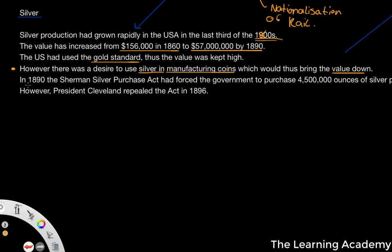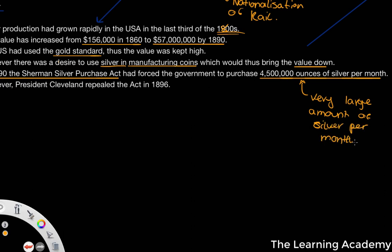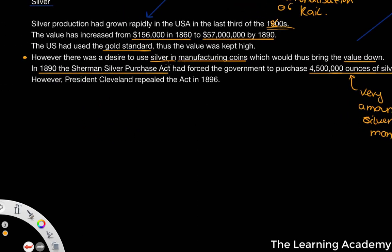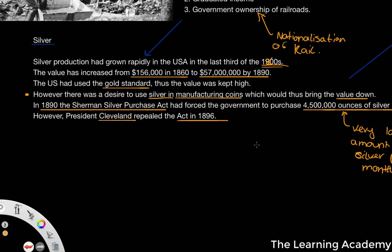In 1890, the Sherman Silver Purchase Act forced the government to purchase 4.5 million ounces of silver per month — a very large amount. However, what was important about this act is that it got repealed by President Cleveland in 1896. So the idea that silver would be used in the manufacturing of coins through the Sherman Silver Purchase Act was eventually repealed, and effectively things went back to the status quo.